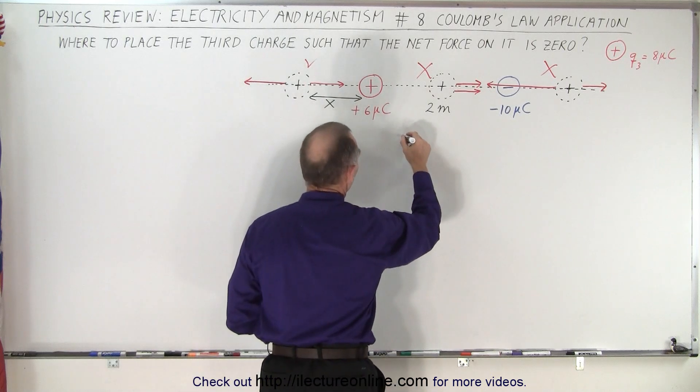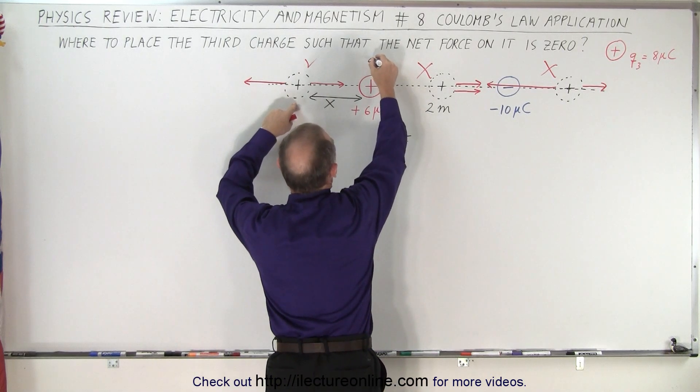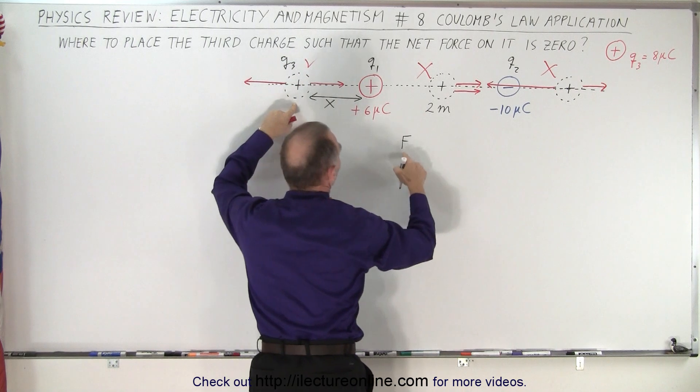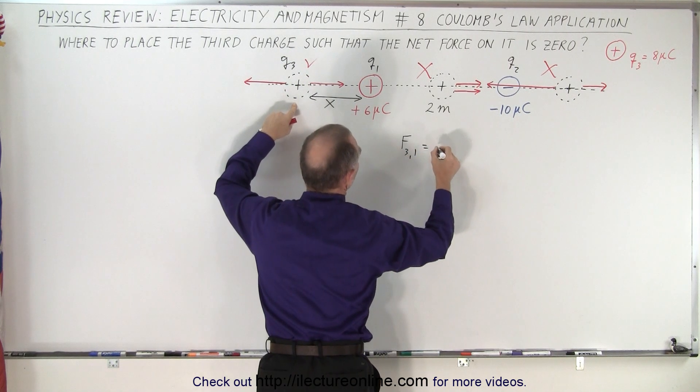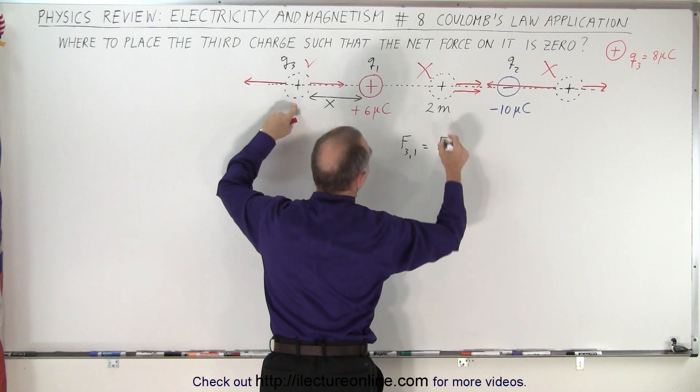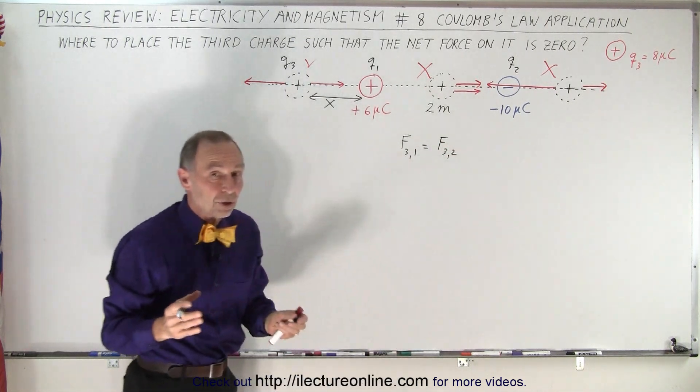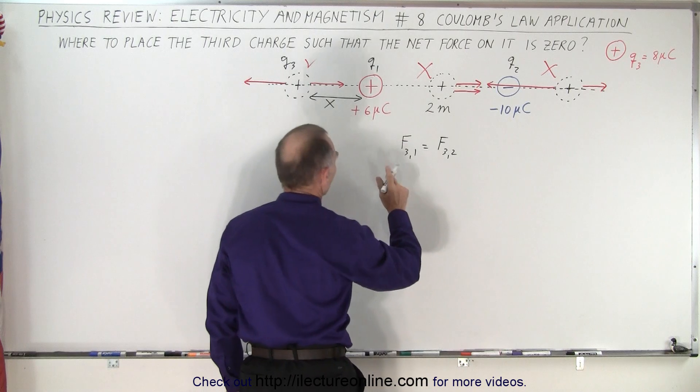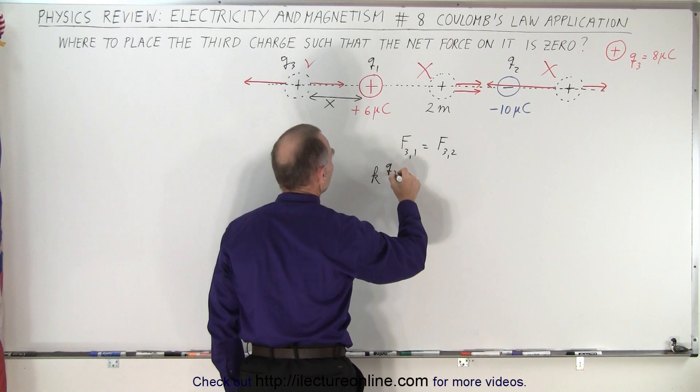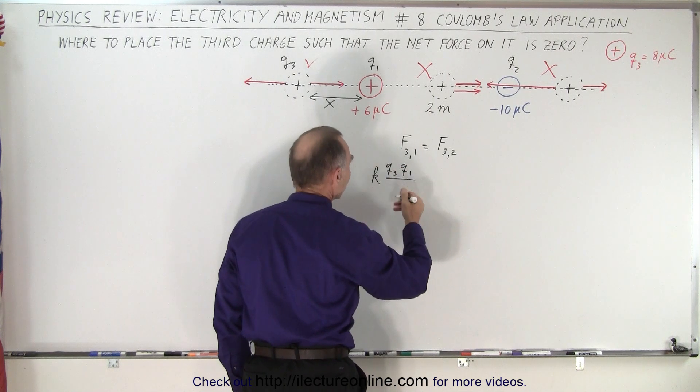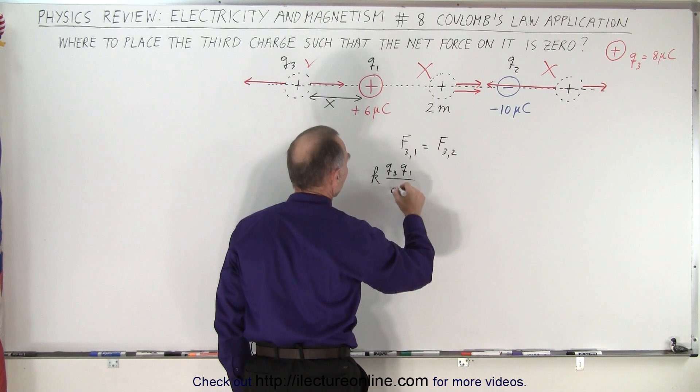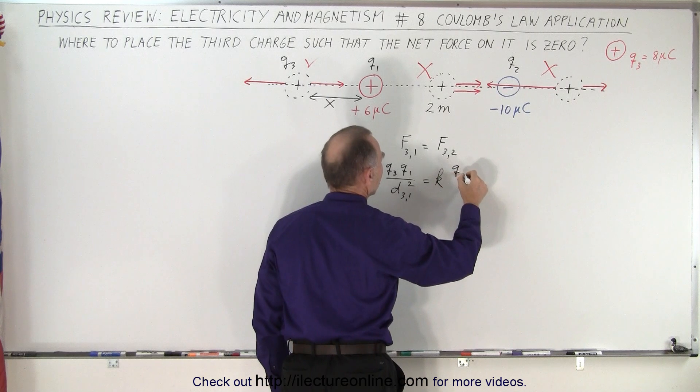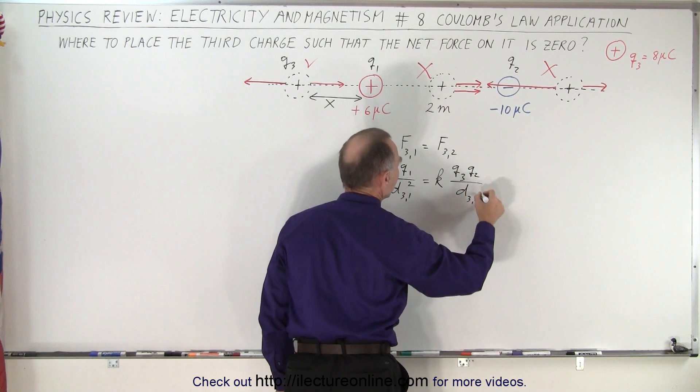And so what we can say is that the force between three, this is charge three, let's call this Q1, let's call this Q2, let's call this Q3, and so the one between three and one should equal the magnitude of the force between three and two. Notice that we don't care about the negative sign because we only want the magnitude of the force and magnitudes will always be positive. So, using Coulomb's law, that will be K times Q3 times Q1, the absolute value of those, divided by the distance between them, distance between three and one squared, and that must equal K times Q3 times Q2 divided by the distance between three and two squared.